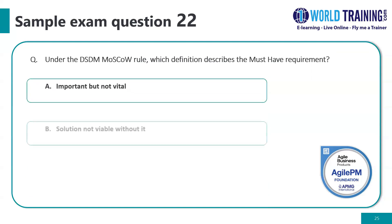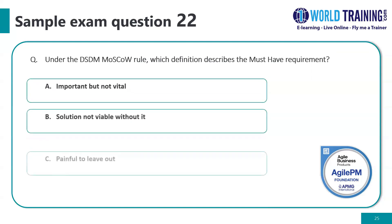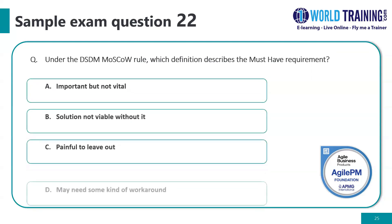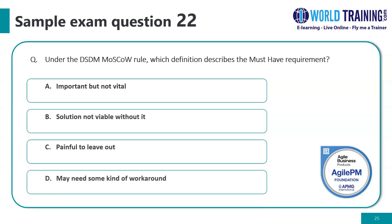Question number twenty-two: under the DSDM MoSCoW rule, which definition describes the must-have requirement? The correct answer is B: solution not viable without it.